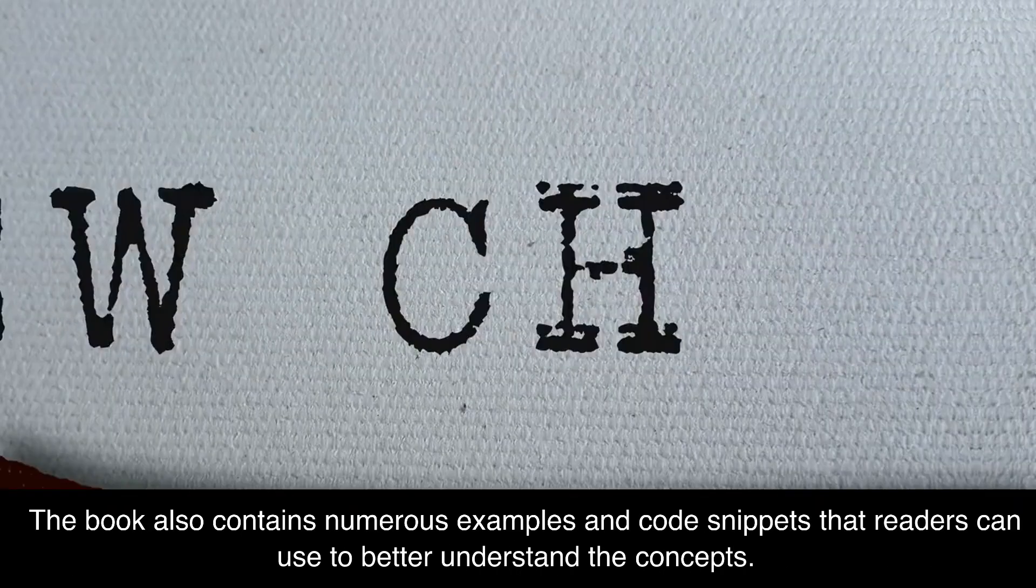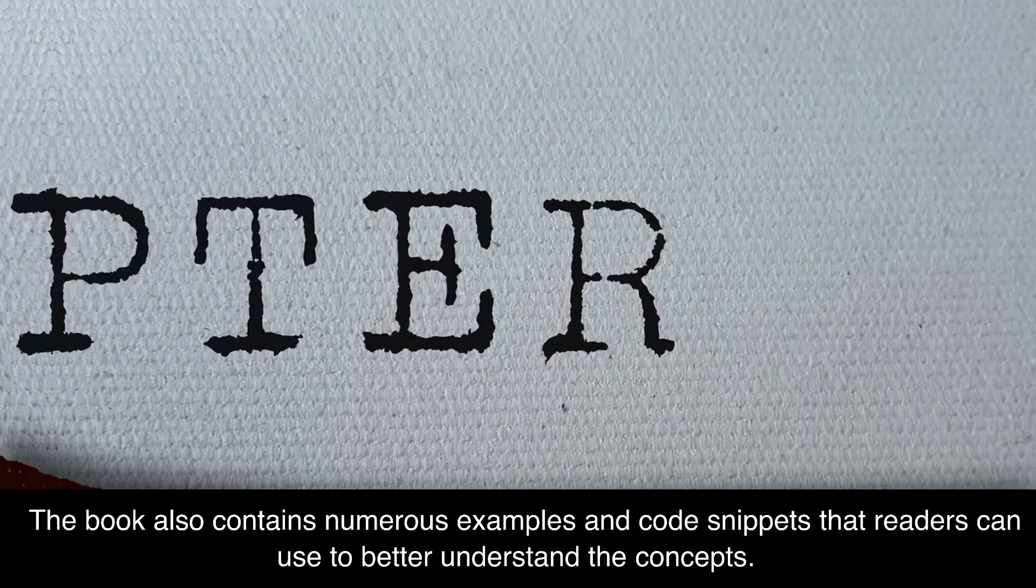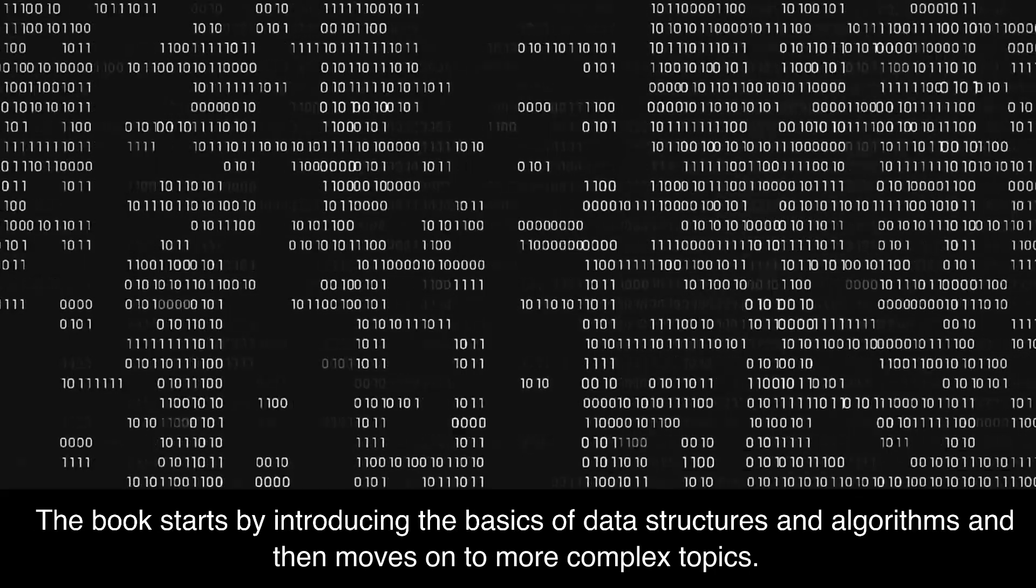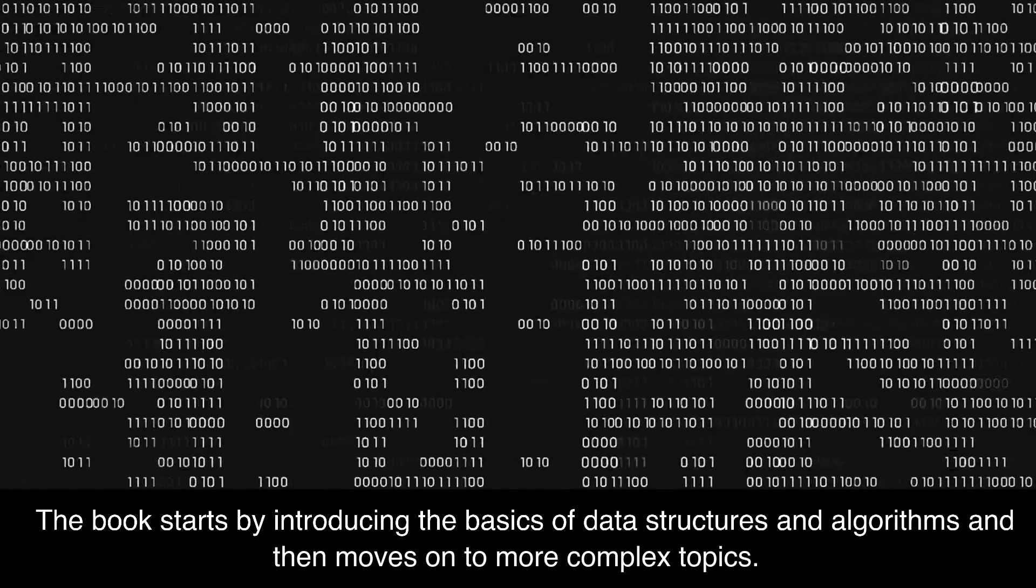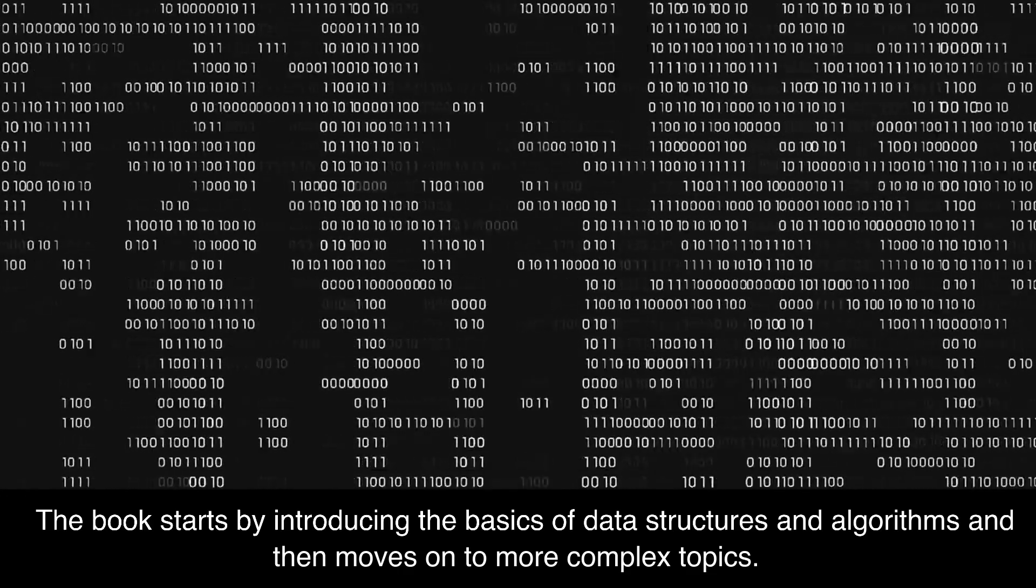The book contains numerous examples and code snippets that readers can use to better understand the concepts. The book starts by introducing the basics of data structures and algorithms and then moves on to more complex topics.